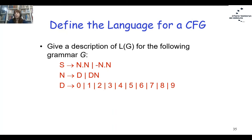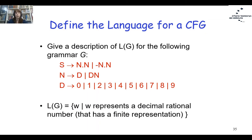Another grammar: S → n.n | -n.n; n → d | dn; d → digits 0–9. The resulting language is all words w representing a decimal rational number — a number with a dot, which can be positive or negative, using decimal alphabet digits 0–9.